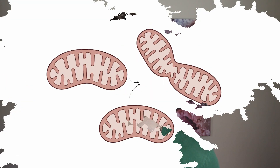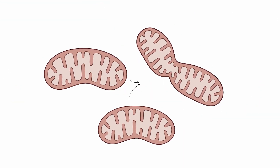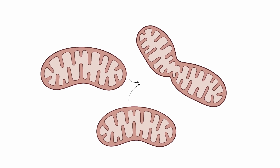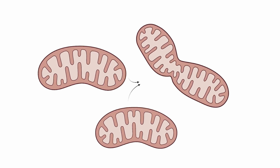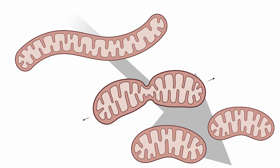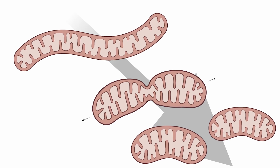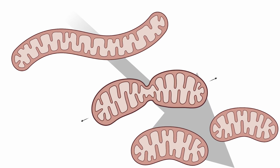Fusion is when two mitochondria approach one another and literally fuse together to form a single larger mitochondrion. Fission is the opposite — a single mitochondrion splitting into multiple mitochondria. This balance is known as mitochondrial dynamics.